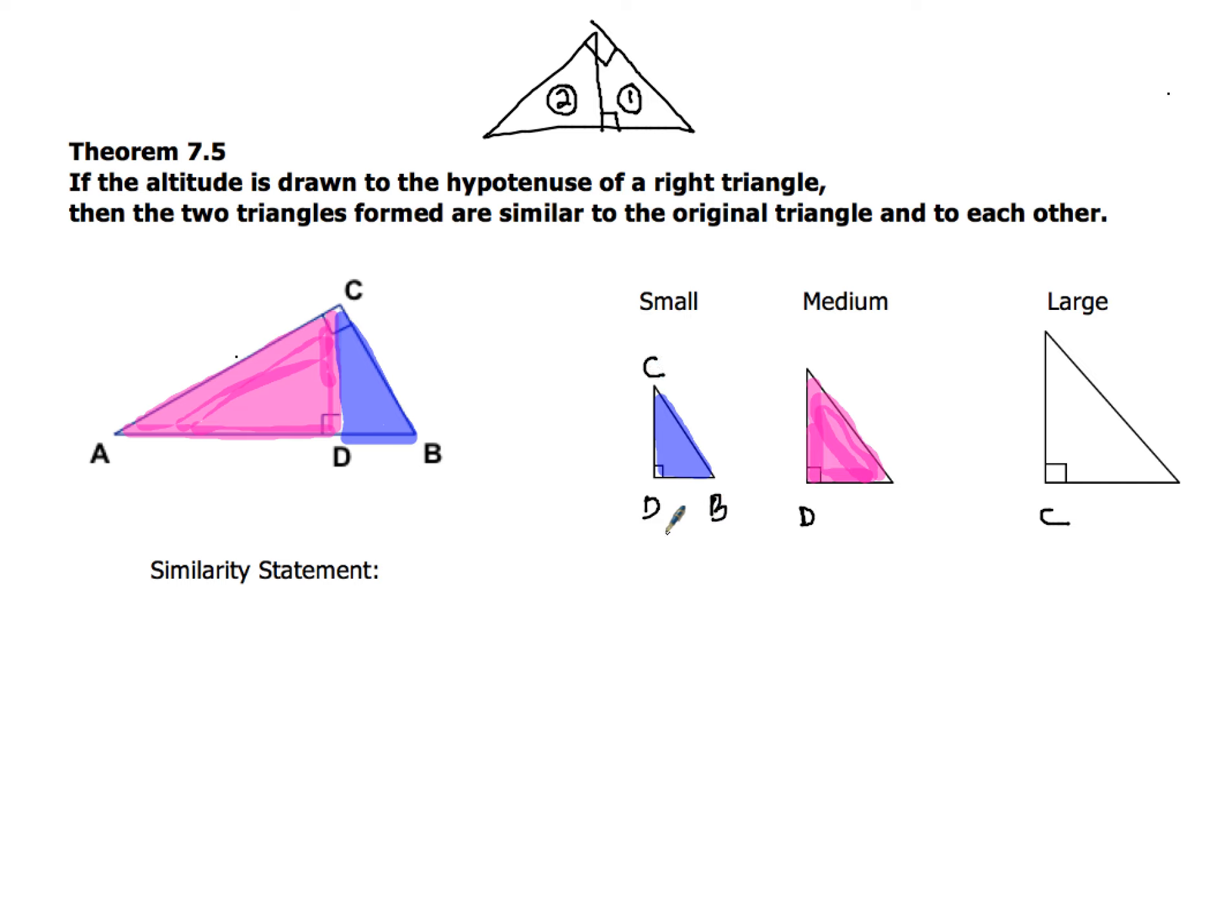So the shorter leg I'm going to put along the bottom side. Now when I go to the medium triangle, the shorter leg of the two remaining sides between AD and DC is definitely going to be DC, which means A then is going to go at the top.